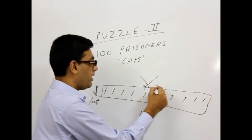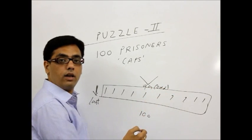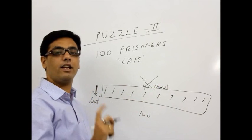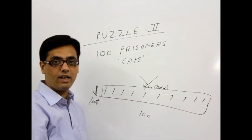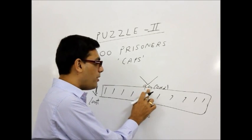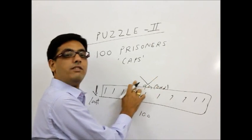Now, the strategy they make is, the last person can see entire 99 people in front of him. This 99 person is odd number. This is definitely odd number. So the property of odd number is that it can be broken as odd plus even. Remember, we discussed in number system as well. The video which you must have seen by now. So odd number can be broken as odd plus even.